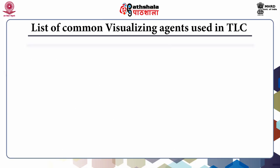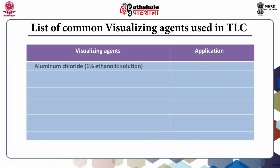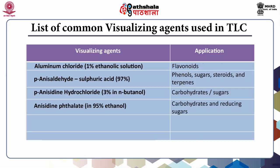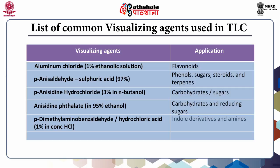The common visualizing agents in thin layer chromatography: First, aluminium chloride prepared in 1% ethanolic solution, applied for the identification of flavonoids. Second, para-anisaldehyde and sulphuric acid combination, used for phenols, sugars, steroids, and terpenes. Para-anisaldehyde hydrochloride is applied for identification of carbohydrates and sugars. Anisidine phthalate is used for carbohydrates and reducing sugars. Paradimethylaminobenzaldehyde with hydrochloric acid is used for indole derivatives and amines. And 2,4-dinitrophenylhydrazine is used for aldehydes and ketones.